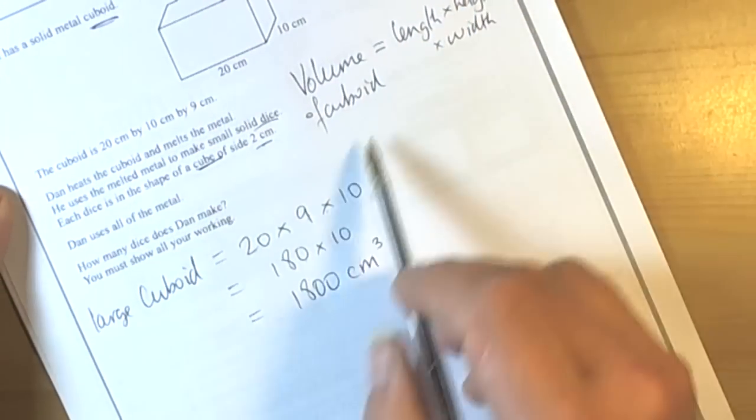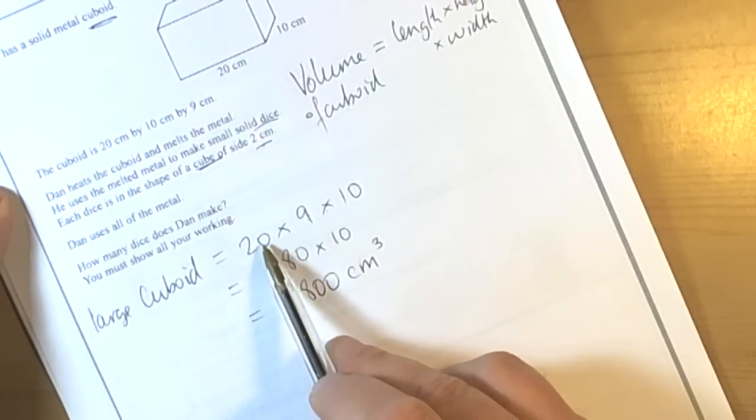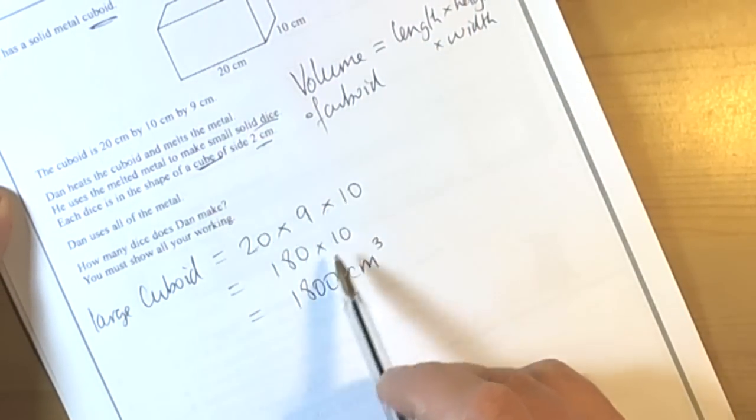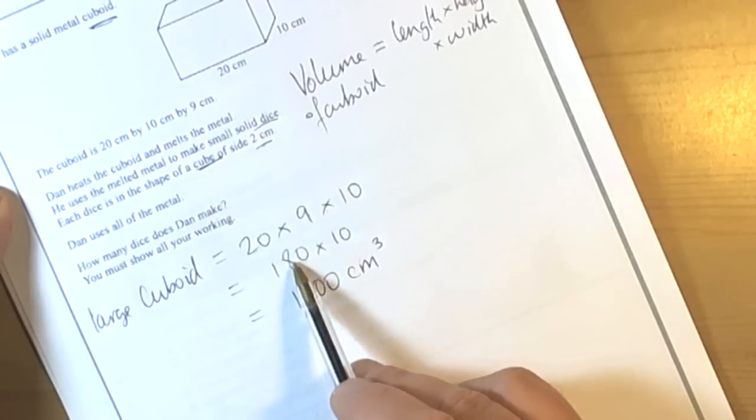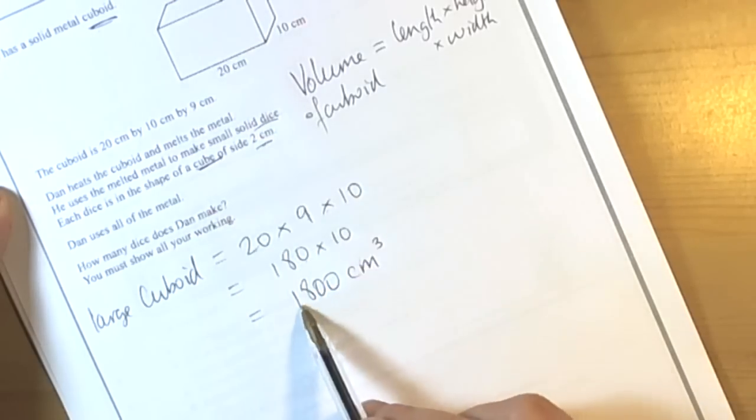So if we work out the volume of the large cuboid first, we can see that we've got to do 20 times 9 times 10. So break it down: 2 nines are 18, times them by the 10 gives 180, and then times by the final 10 gives 1800.